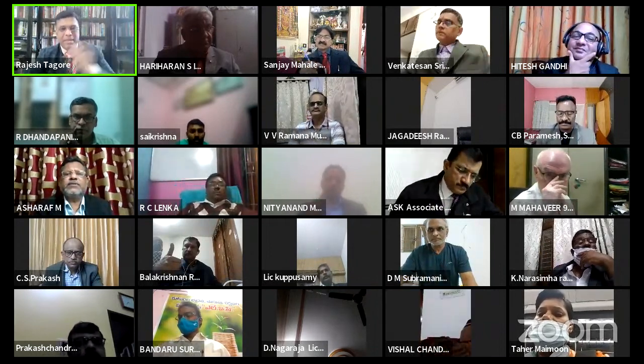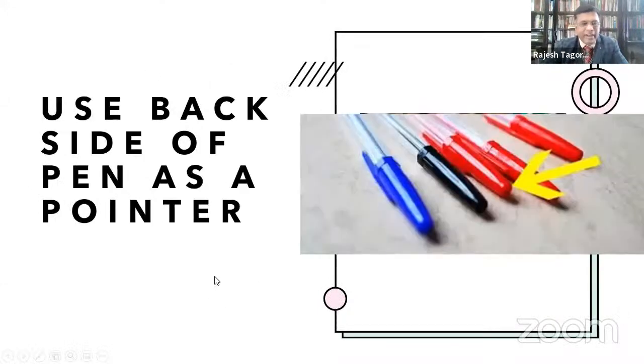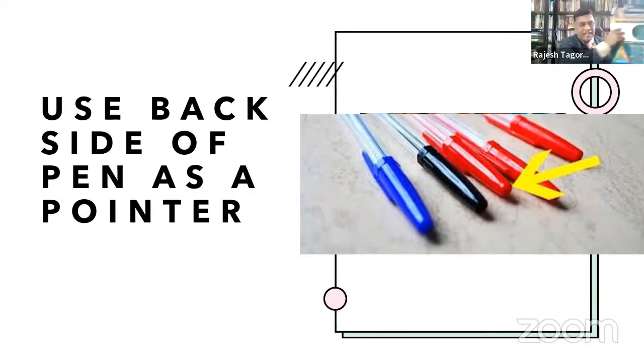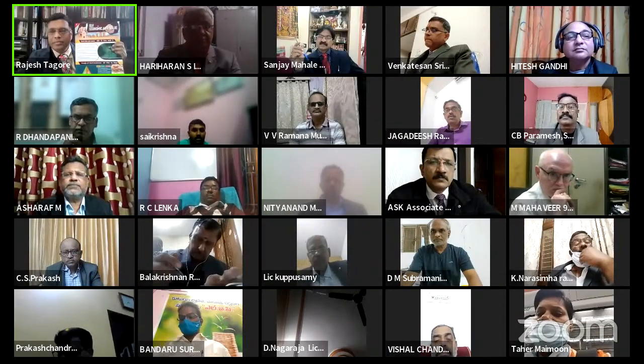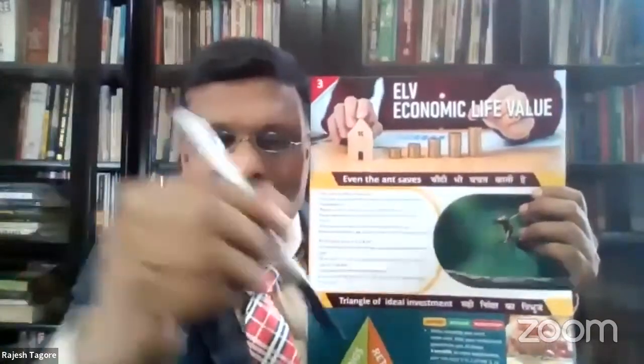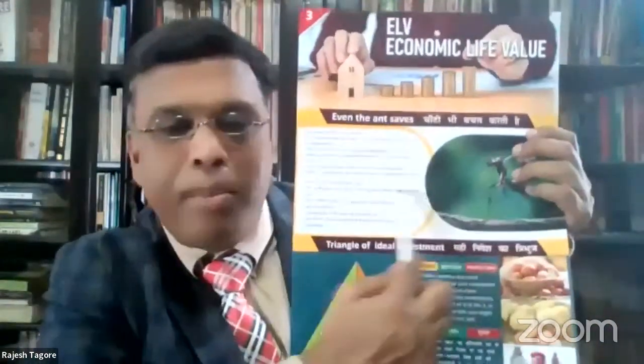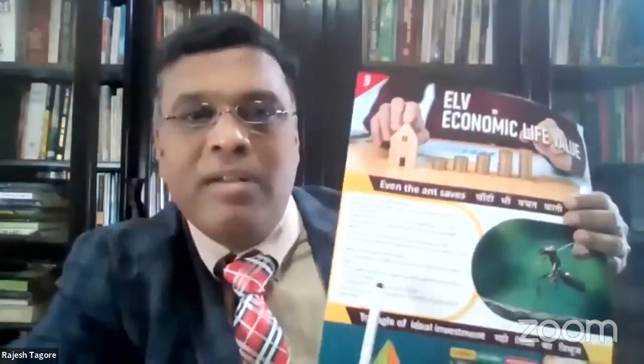Always carry the full kit. The second rule is to use the backside of the pen as a pointer while presenting. If you are showing the presentation, always hold a pen as a pointer. This is the writing side and this is the backside — always show the backside of the pen as a pointer at wherever you are reading or explaining. Wherever you are showing, you should be in a position to present using the pen.